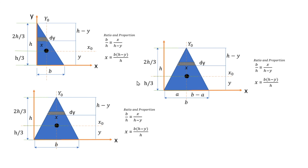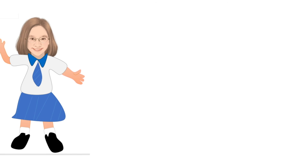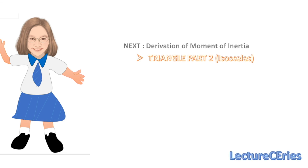That concludes today's discussion on the right triangle moment of inertia. But we're not totally done with triangles yet — there's more to discuss. The next video will cover the derivation for the isosceles triangle, and we'll explain why the Iy is different and why the lower formulas are not required to memorize, since the right triangle formulas plus the parallel axis theorem are sufficient.